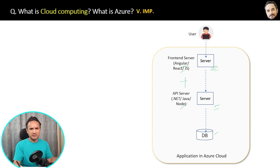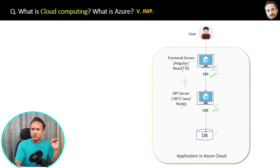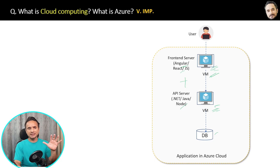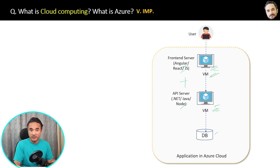Inside the Azure cloud there are many services. For example, for front-end and back-end servers you can use virtual machines. These virtual machines are almost the same as your application servers but they are present in the Azure cloud — so we have a new name for them: virtual machine. Next, in Azure cloud there are many databases, but the simplest one is Azure SQL Database.